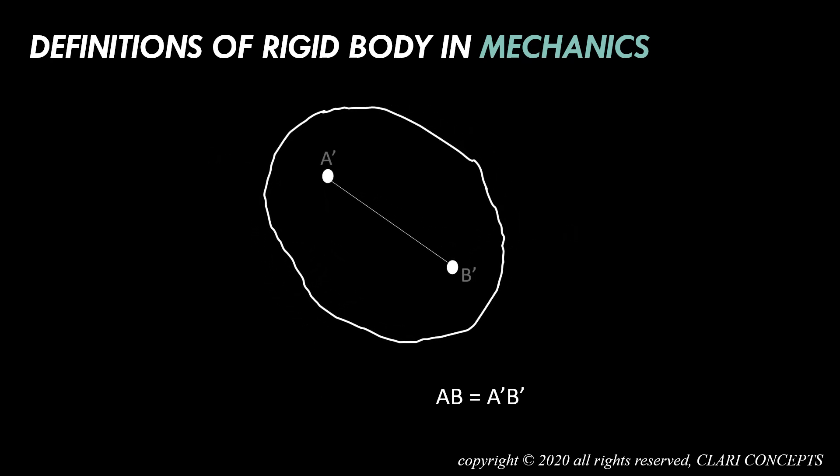This animation denotes that the body has changed its position—it has rotated. And now the two points A and B are changed to A' and B'. But if you notice something, the distance between A' and B' was similar to that of A and B. That means it is a rigid body.